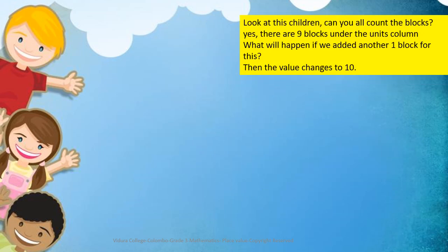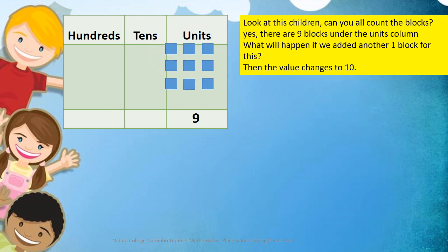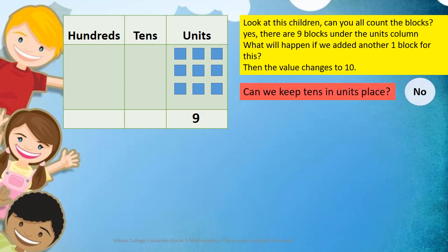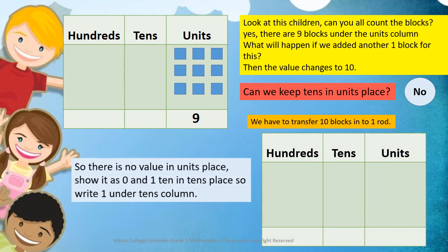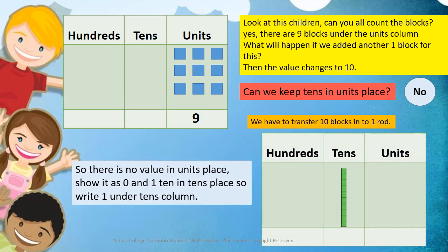Look at this, children. Can you all count the blocks? There are nine blocks under the units column. What will happen if we add another one block? Then the value will change to 10. Can we keep 10 in the units place? No, we have to transfer 10 blocks into one rod. So there is no value in the units place — show it as 0 — and 1 ten in the tens place, so write 1 under the tens column.